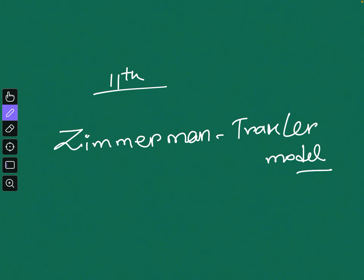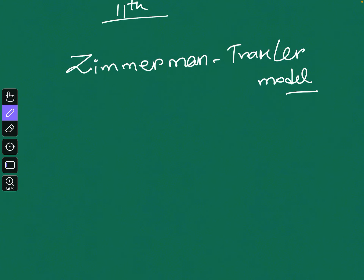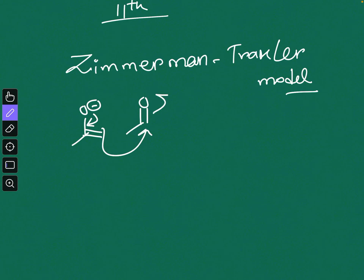The Zimmermann-Traxler model is extremely important for predicting the outcome of stereoselective aldol reactions. In the aldol reaction, under basic conditions, an enolate reacts with an aldehyde or ketone — the carbonyl compound — to give the corresponding aldol product. This is what we call the aldol reaction.